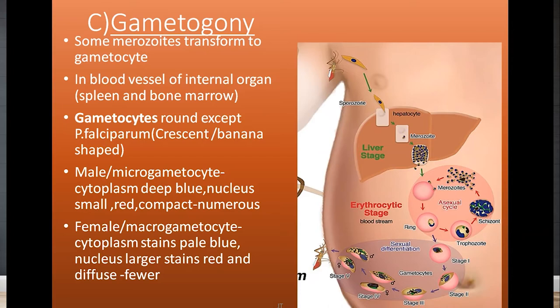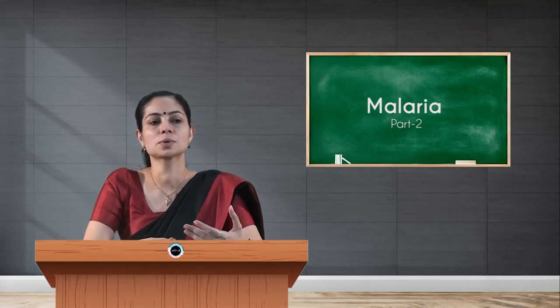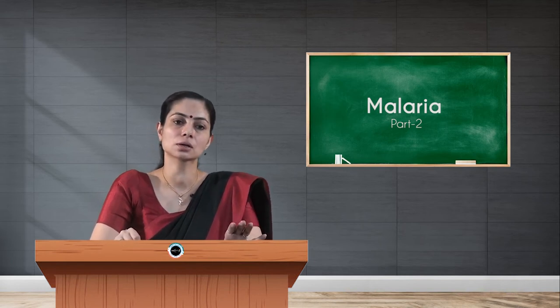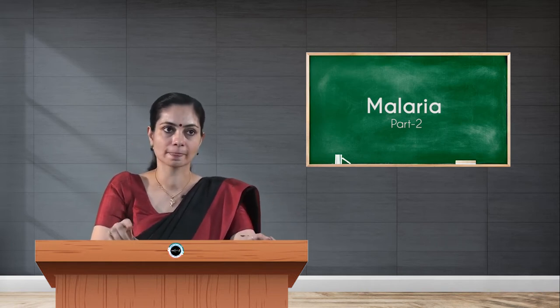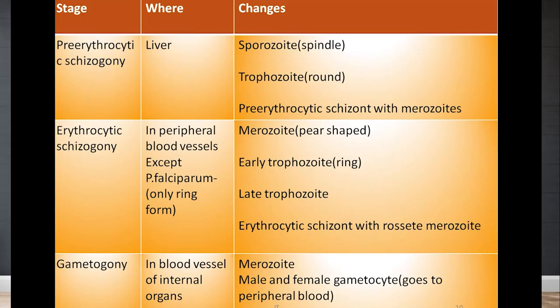The number of macro-gametocytes is fewer. This is the difference between male and female gametocytes. The malarial parasite completes its life cycle in the human body with final products being macro-gametocytes and micro-gametocytes. Here is a summary table of the three stages: pre-erythrocytic schizogony happens in the liver; erythrocytic schizogony happens in peripheral blood, except in Plasmodium falciparum where only the ring form can be seen; gametogany happens in blood vessels of internal organs, though gametocytes may later move to peripheral blood.